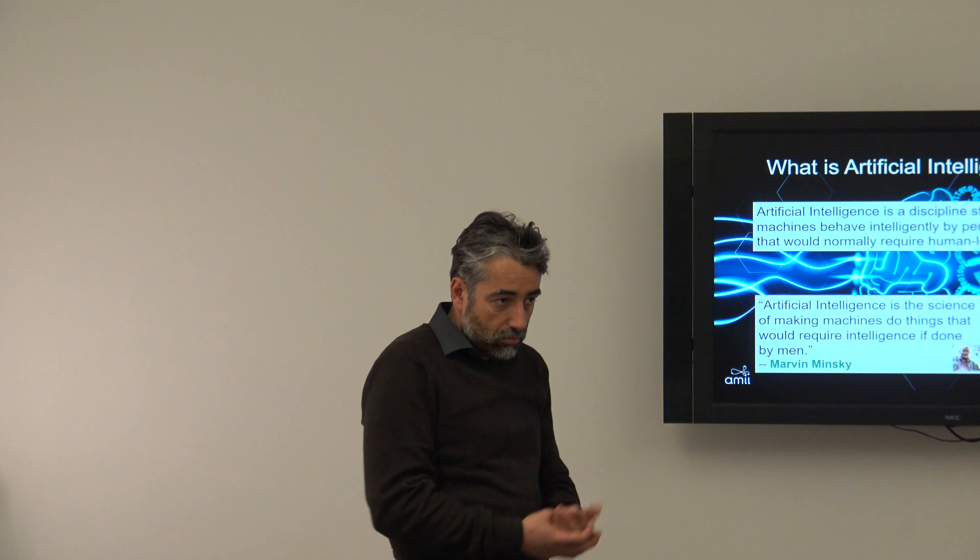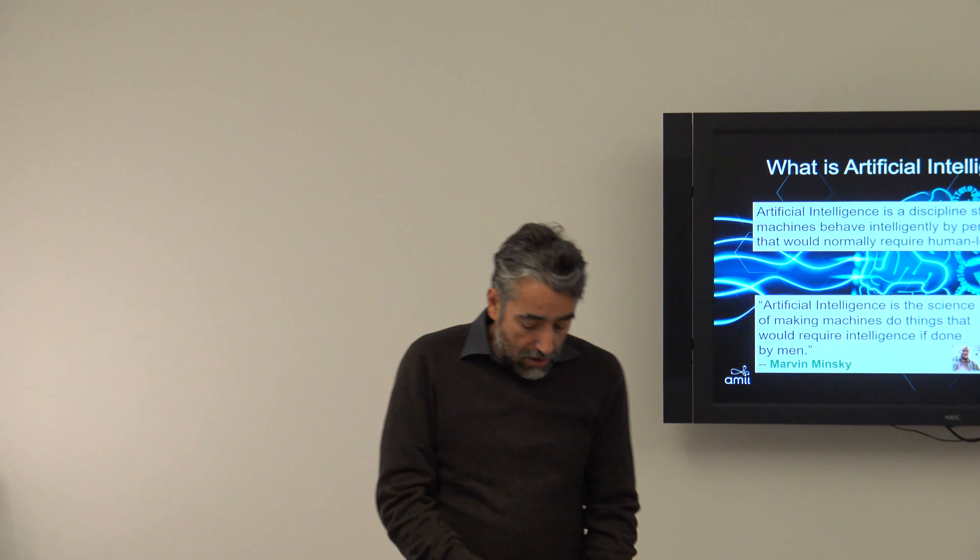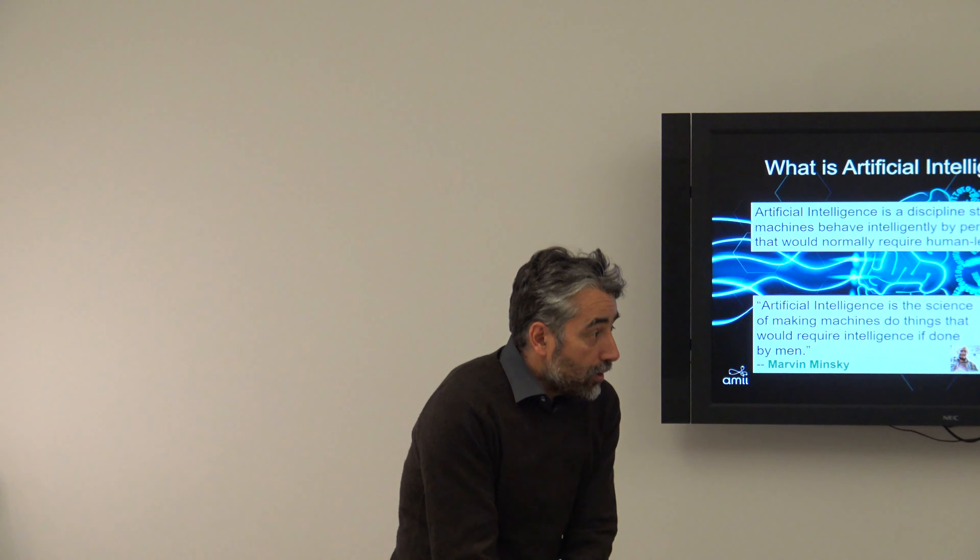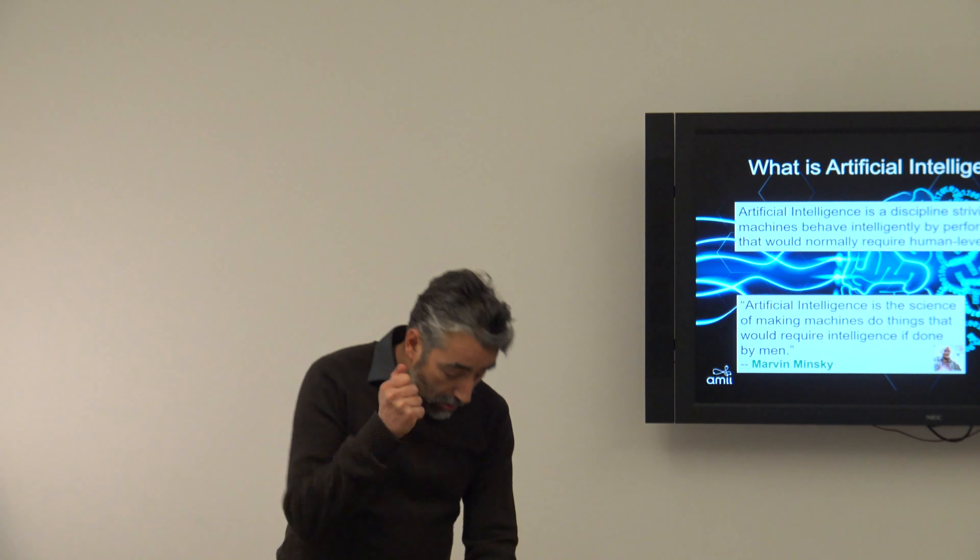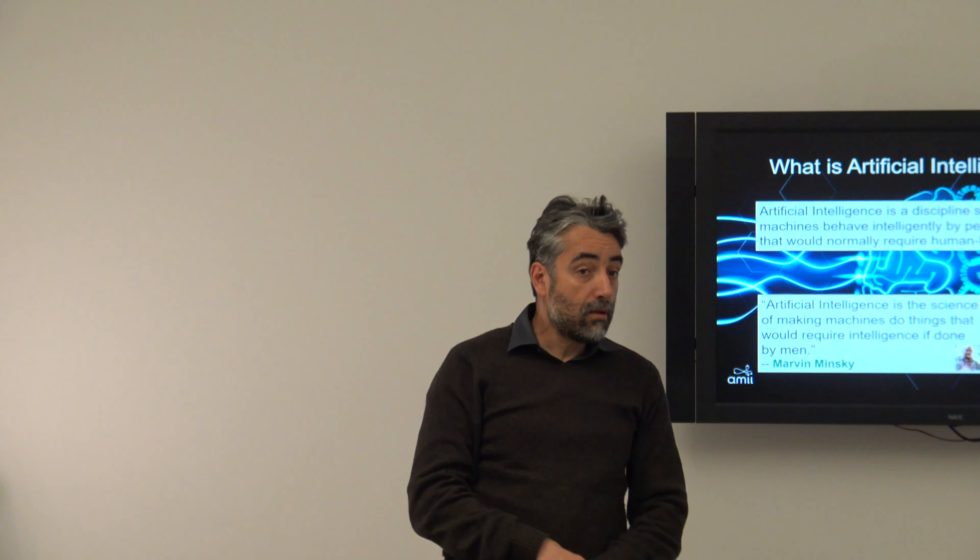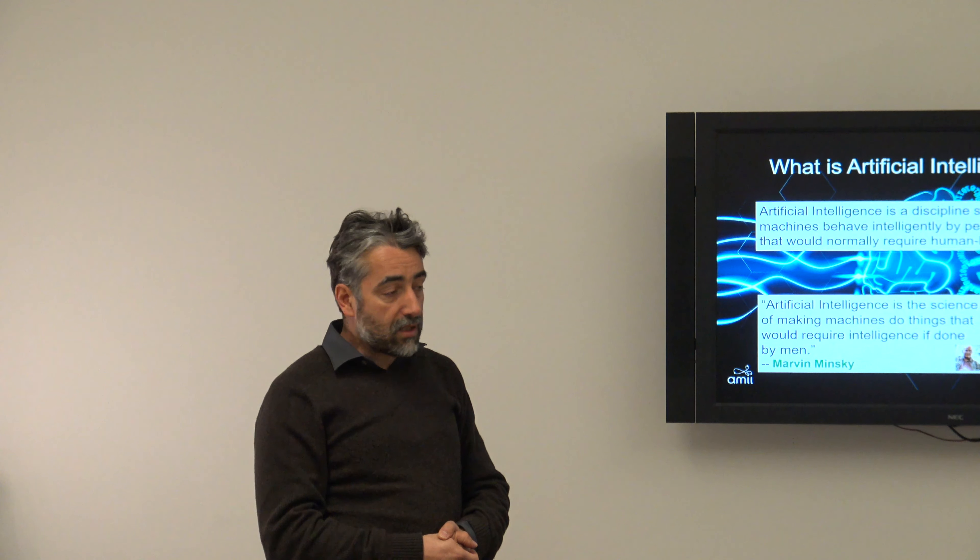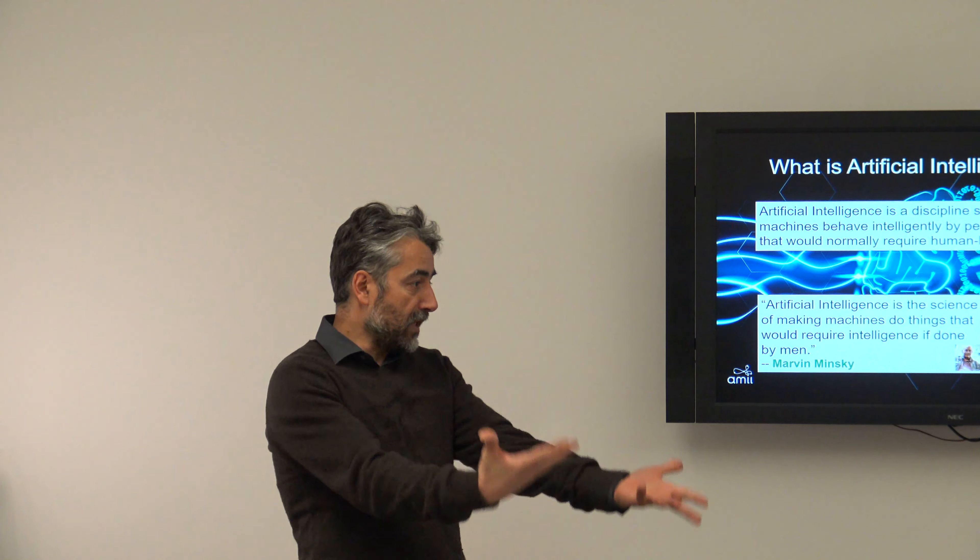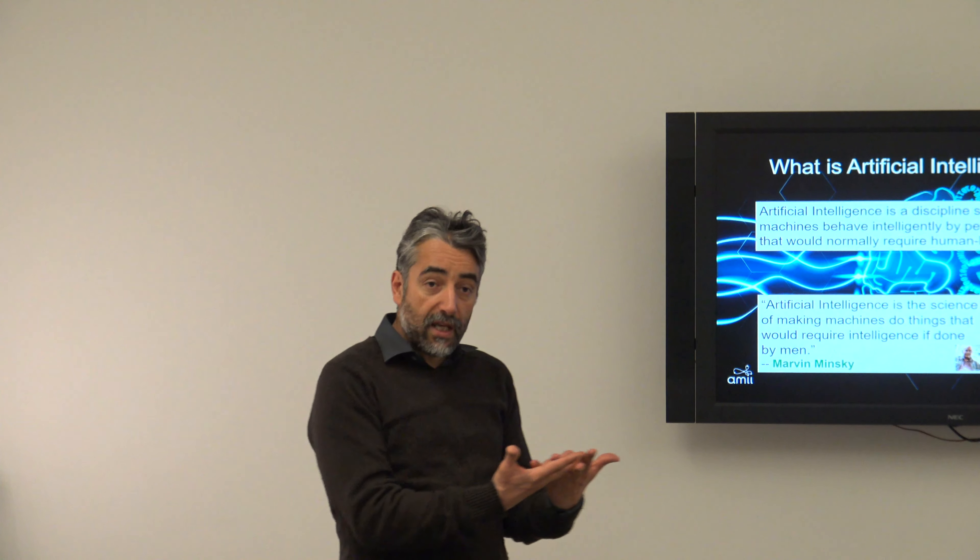Who thinks today that your word processor is AI? Nobody. Nobody. So the definition of what is AI is a moving target that changes with time. So once it's a common thing and everybody thinks it's trivial, it's not AI anymore. So who knows what we will consider AI tomorrow. Here's a common definition. Artificial intelligence is a discipline. So it's like a science. It's a discipline striving to get machines behave intelligently by performing tasks that would normally require human intelligence.